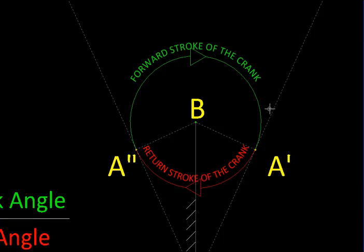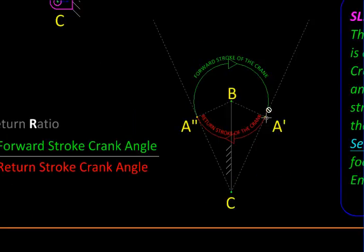Like this, so this is the path of the slider and these are the two extreme positions of the slotted lever. Again here we can see the angle turned by the crank during the forward stroke, shown in green, and the return stroke shown in red are unequal.